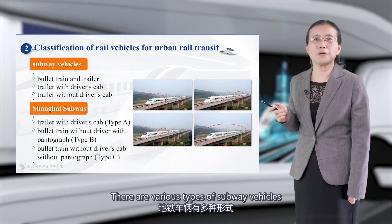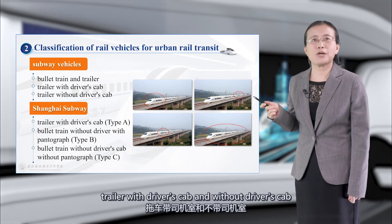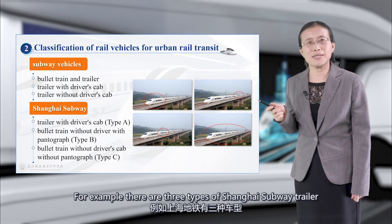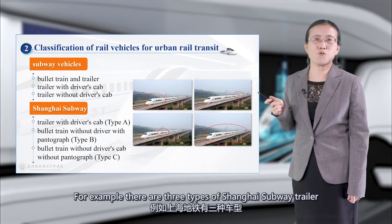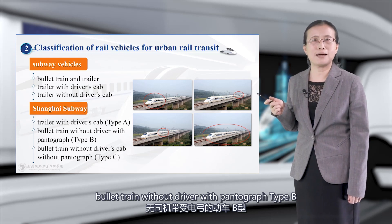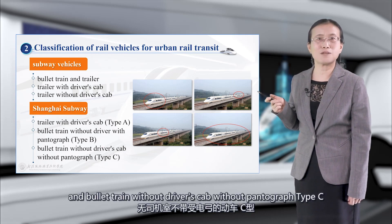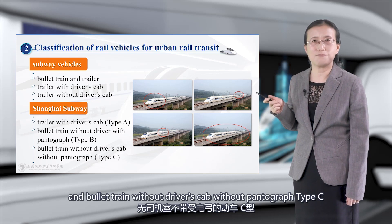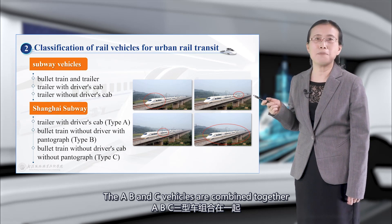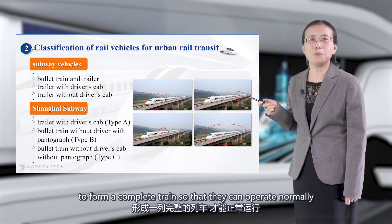There are various types of subway vehicles, such as motor cars and trailers, with or without a driver's cab. For example, there are three types of Shanghai subway cars: trailer with driver's cab (type A), motor car without driver's cab with pantograph (type B), and motor car without driver's cab and without pantograph (type C). The A, B, and C vehicles are combined together to form a complete train so that they can operate normally.